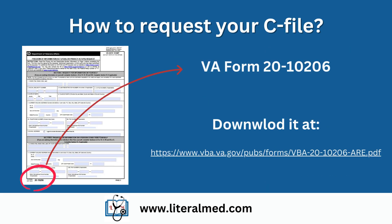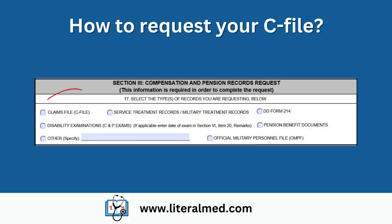Now that we understand the importance of a C-File, let's discuss how to request it. First, you need to download VA Form 20-10-06, which can be found at the address shown on the screen. You can also go to any of the VA regional offices and request the form. When filling it out, be sure to include all relevant information such as the Veteran's full name, branch of service, and dates of service, and pay attention to Section 3, where you will select the option of Claims File.